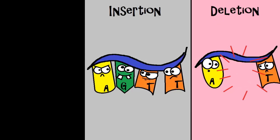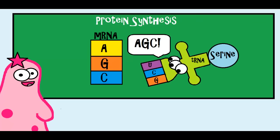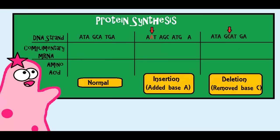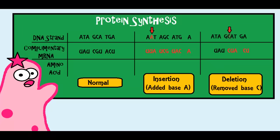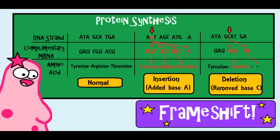Insertions and deletions have the potential to be especially dangerous. Remember, in protein synthesis, bases are read in groups of three. If you add or remove a base, the total number of bases changes. So if you're reading in 3s, depending on where it happened, everything read afterwards has the potential to get really messed up. We call this a frame shift.